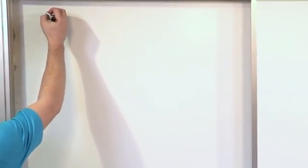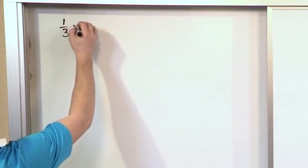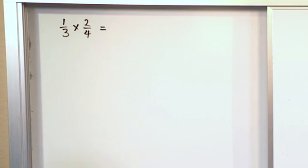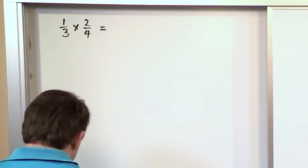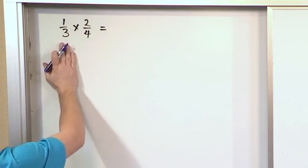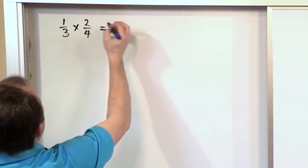So let's say we have 1/3 times 2/4. So this is a set of fractions. By now you should know that really all you care about is multiplying the top and multiplying the bottom. You do not care about any kind of common denominator when you're multiplying fractions.